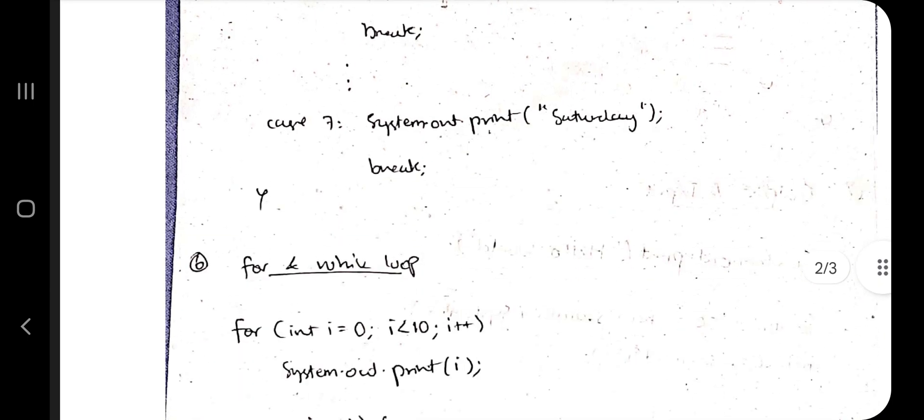Coming to the for and while loop, just write 'for' keyword here. Inside that, three things will be there: the first thing is int i equals 0 - the starting value - and the condition will be checked here, and then this will be executed, and after this gets executed, this will be coming here, means increment.